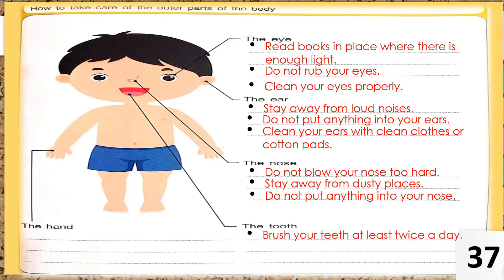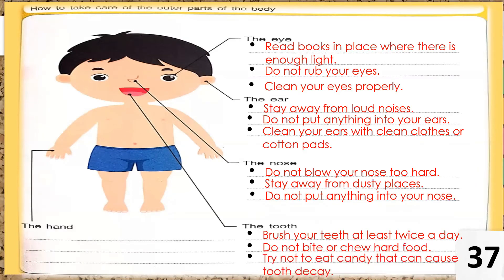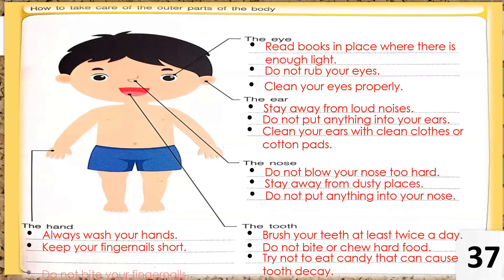For the tooth: brush your teeth at least twice a day, do not bite or chew hard food, and try not to eat candy that can cause tooth decay. For the hands: always wash your hands with clean water and soap, keep your fingernails short, and do not bite your fingernails.